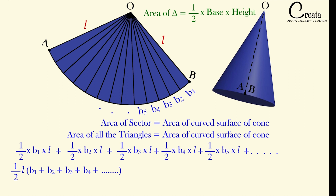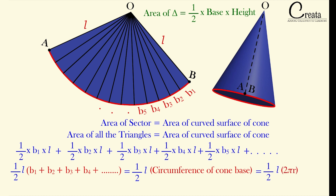Now observe that B1 + B2 + B3 + B4 ... up to point A equals the circumference of the bottom circle of the cone. So we can replace this complete sum with the circumference of the circular base, which is 2πr. Substituting, we get the curved surface area of the cone as πrl.